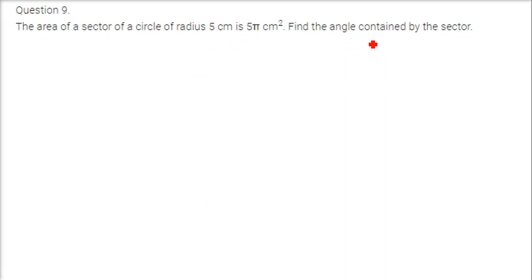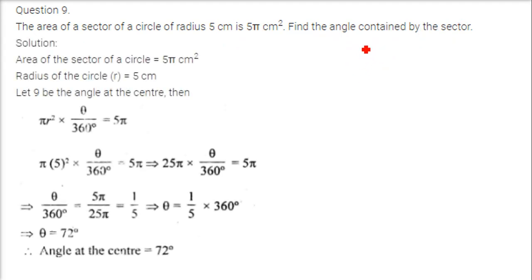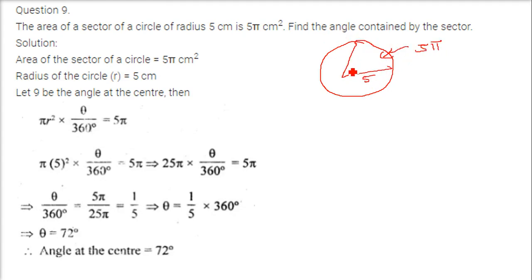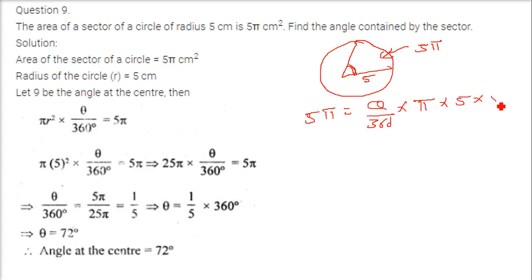The area of a sector of a circle of radius 5 centimeter is 5 pi centimeter square. Find the angle contained by the sector. The area is 5 pi, radius is 5, so 5 pi equals theta by 360 into pi into 5 into 5. The 5 pi and 5 cancel, so theta equals 360 by 5, which is 72 degrees.